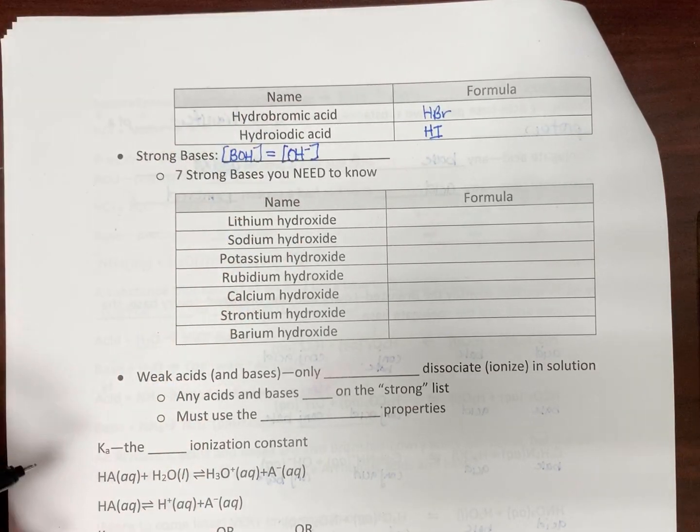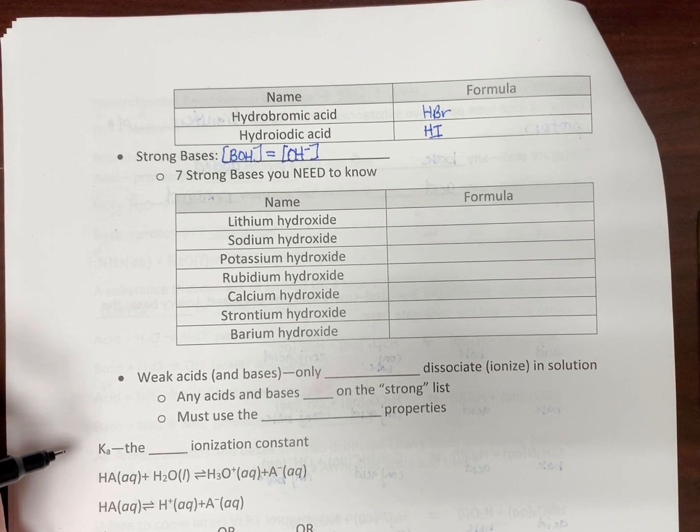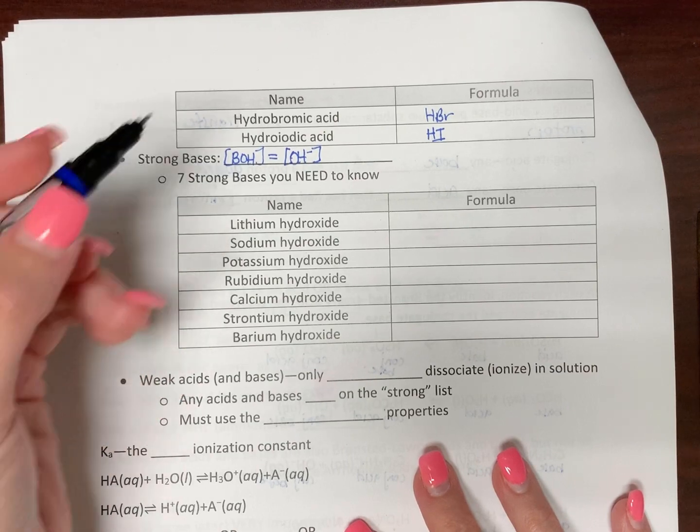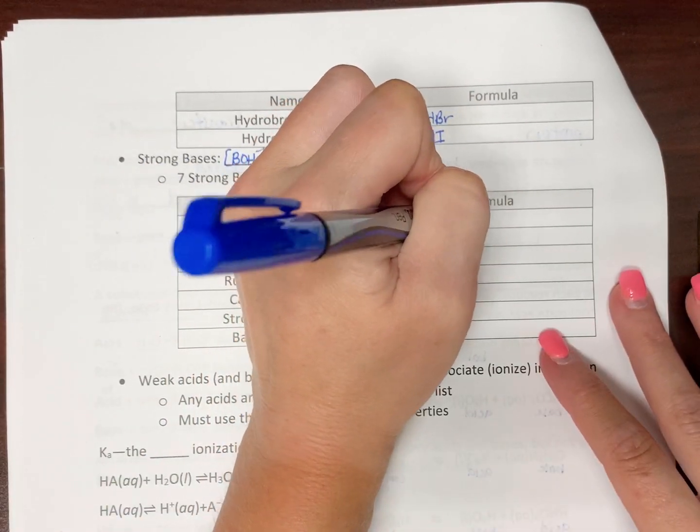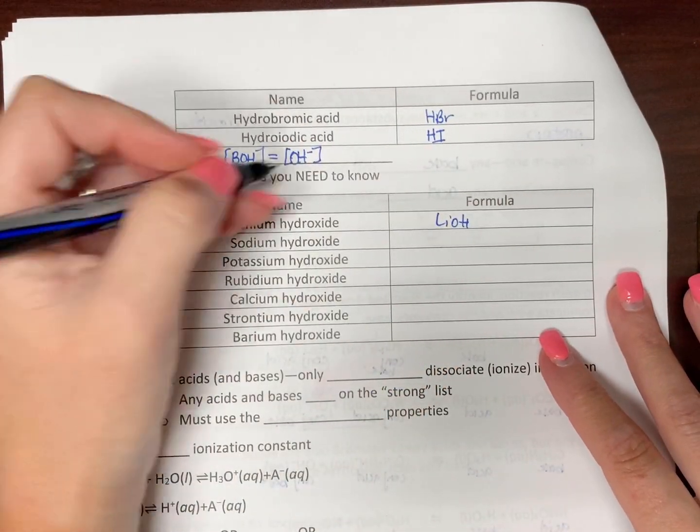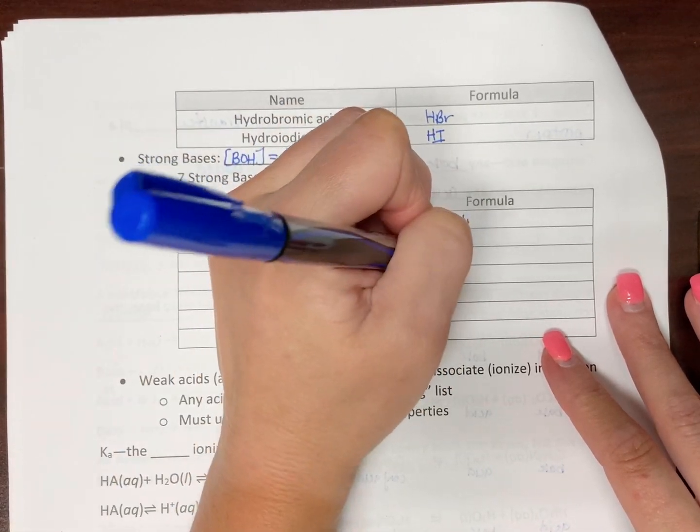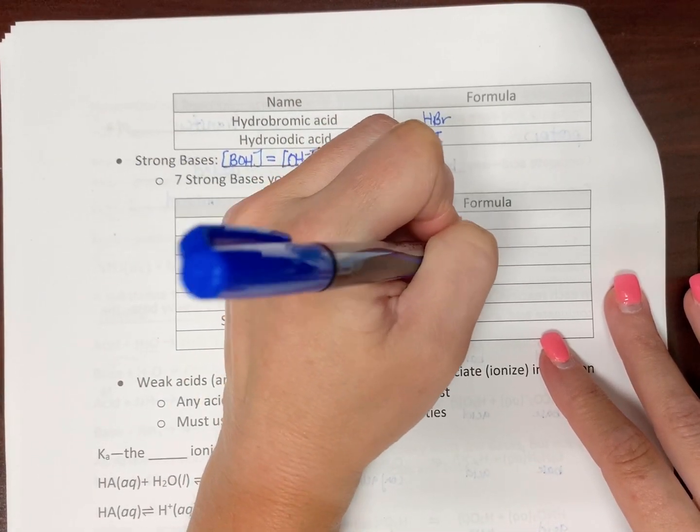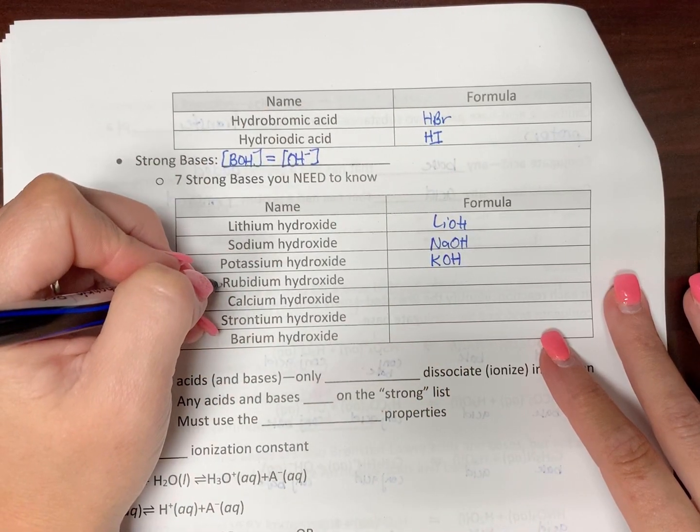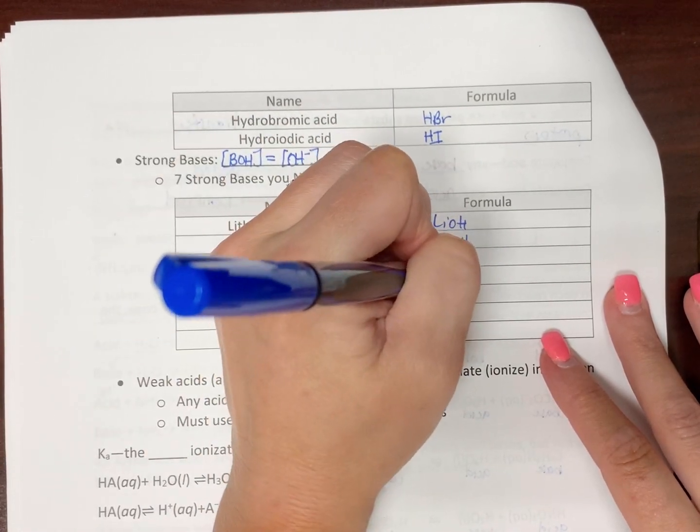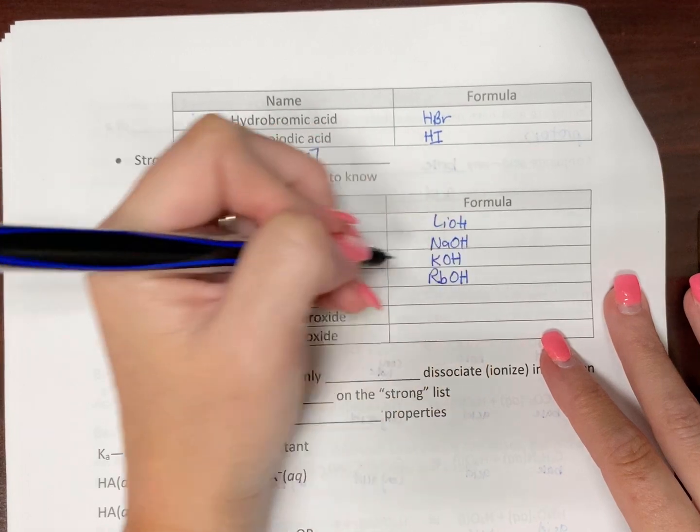The concentration of the hydroxide. So again, that makes things easier. So lithium hydroxide, LiOH, sodium hydroxide, NaOH, potassium hydroxide, KOH, rubidium hydroxide, RbOH.